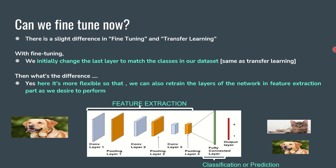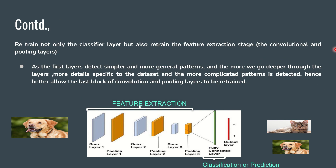There is a question: what is the difference between fine tuning and transfer learning? With fine tuning, initially we change the last layer to match the classes in our dataset — this is exactly what we do in transfer learning. But the difference is that fine tuning is more flexible: we can also retrain the layers of the network in the feature extraction part. The red box is bigger now — last time it was only on the fully connected layer, but now we have freedom to retrain the content in the feature extraction part as well. The convolution layers and pooling layers can also be retrained.